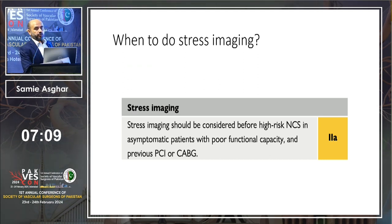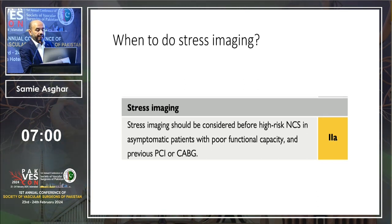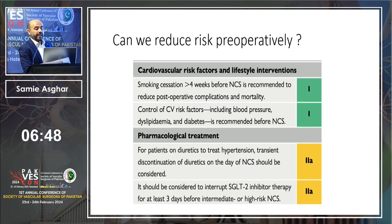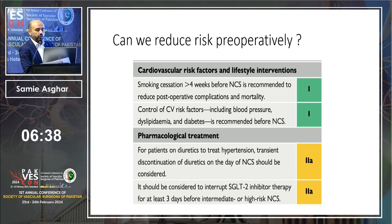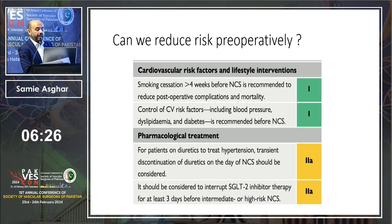The ESC guidelines address when to do stress imaging: it should be considered before high-risk non-cardiac surgery in asymptomatic patients with poor functional capacity or a previous history of angioplasty or CABG. Risk can also be reduced preoperatively by modifying risk factors — smoking cessation for more than 4 weeks before non-cardiac surgery is recommended, along with control of blood pressure, dyslipidemia, and diabetes. Diuretics should be discontinued on the day of surgery.